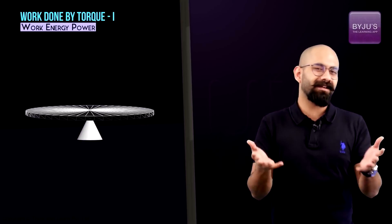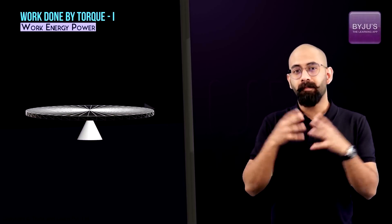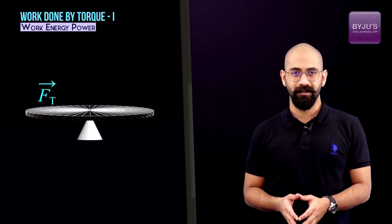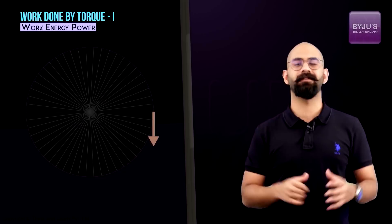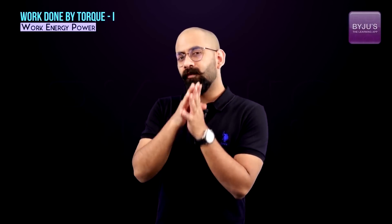Let's take the simple example of a disc that's pivoted at the center, so it can rotate about its center. Let's also assume there's a person holding this disc at a point on the edge, rotating it by providing a force that's always tangential to the disc. The magnitude of this force is always Ft, and the disc is being rotated for some time dt. The question is: what is the work done by this force Ft?